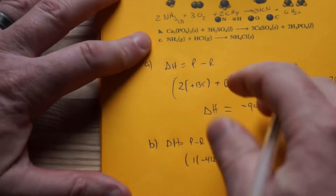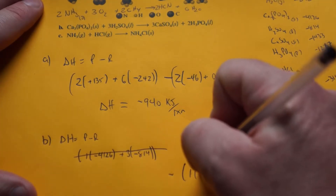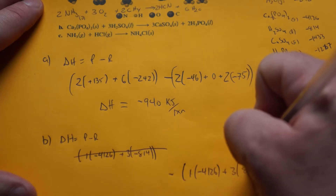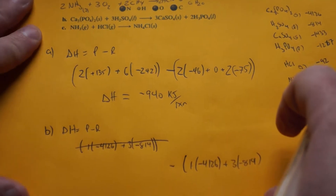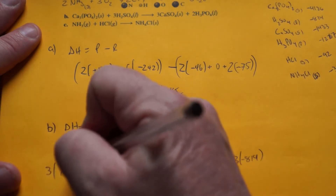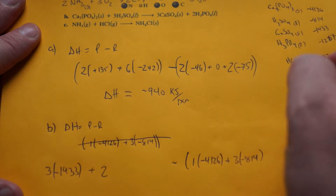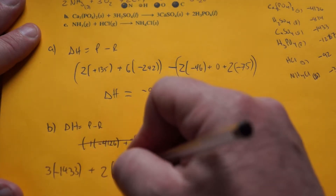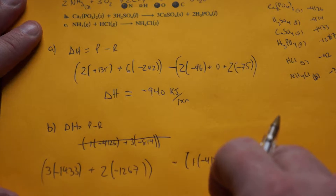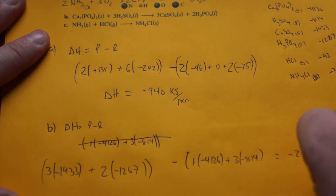Correcting the calculation: 3 times calcium sulfate, which is negative 1,433 kilojoules per mole, and the other product is hydrogen phosphate at negative 1,267 kilojoules per mole. Those are the products. The reactants were calcium phosphate at negative 4,162 kilojoules per mole and 3 moles of hydrogen sulfate. Putting it into the calculator, ΔH comes out to negative 265 kilojoules per reaction.